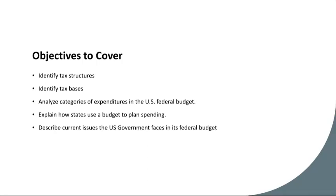Complementing tax structures are tax bases — the sources of income or activities that governments tax to generate revenue. These bases can encompass various categories, including income, sales, property, and corporate profits. Understanding them is crucial for policymakers to design effective policies that balance revenue needs with economic growth and equity.